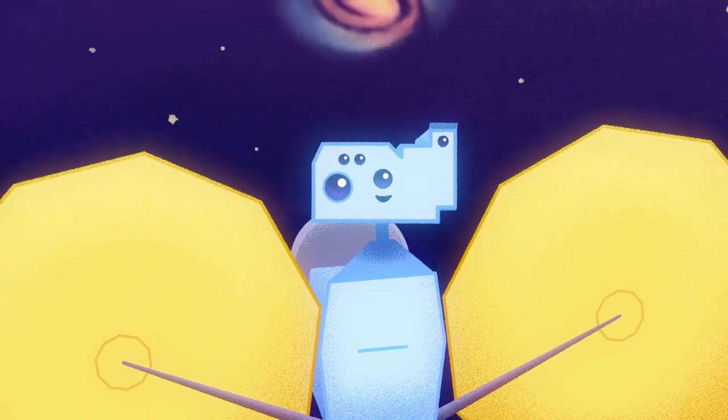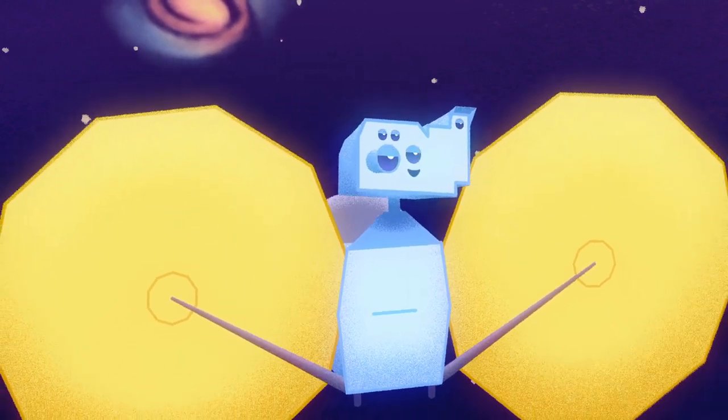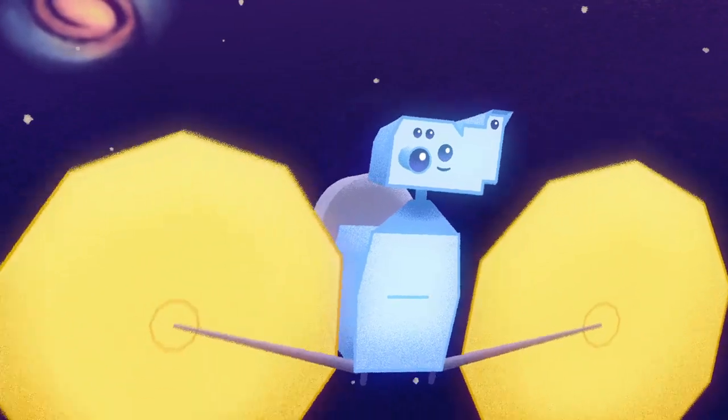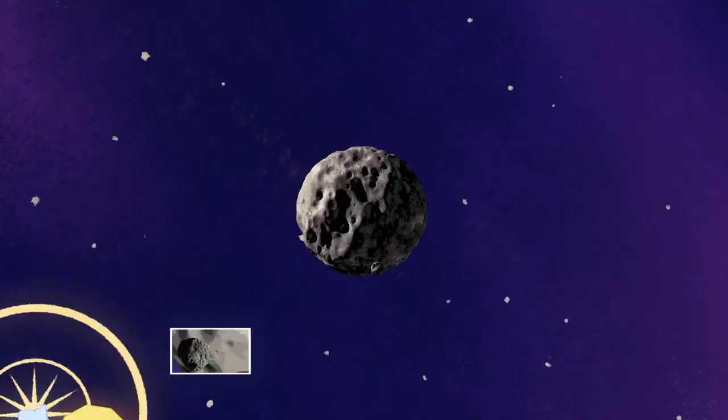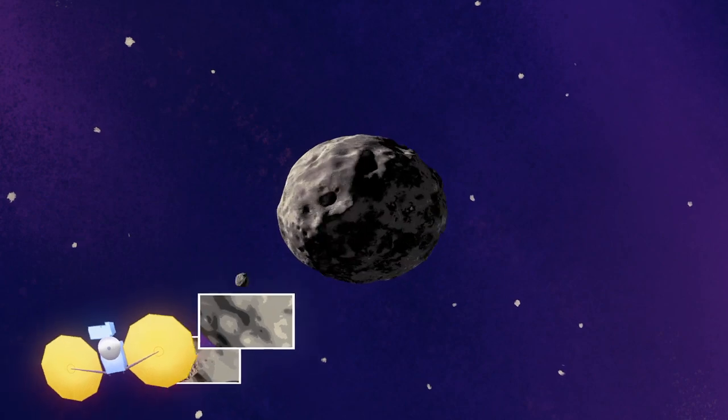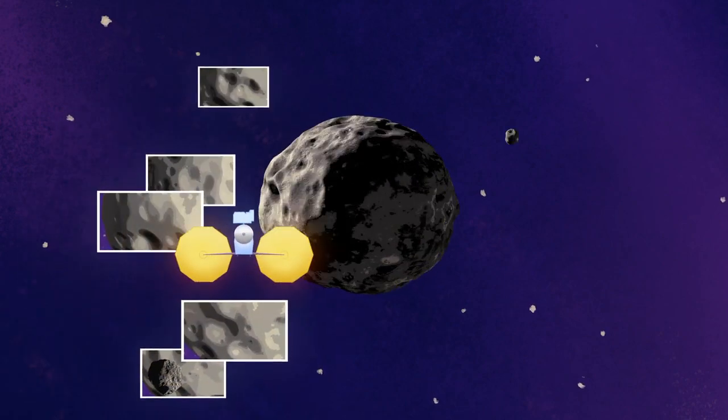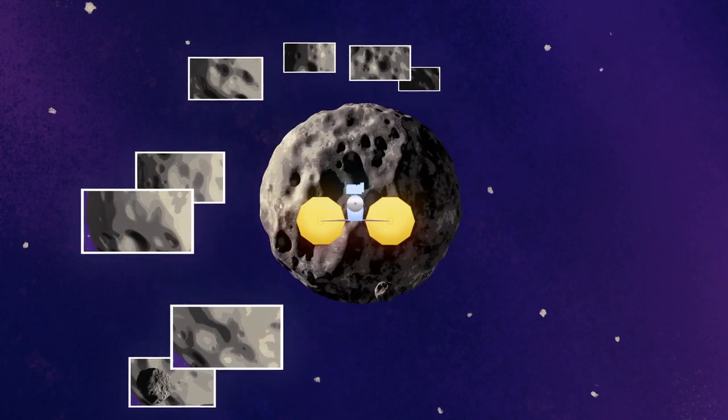Once Lucy starts approaching one of its asteroid targets, the navigation team utilizes the instruments and cameras on board to take pictures of the asteroid and background stars, which helps them hone in on targeting the close flyby.